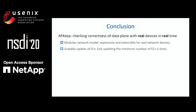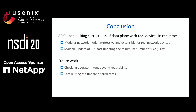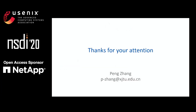To conclude, APKIP can check the correctness of data planes consisting of real devices in real time. To achieve that, it builds on a modular network model which is expressive and extensible. In addition, APKIP uses a new method that can fast update the minimum number of equivalent classes in less than one millisecond. Our future work includes extending APKIP to check operator intents beyond reachability properties, and we also plan to make the update of predicates parallel. Thanks for watching, and I'm happy to take any questions through this email.